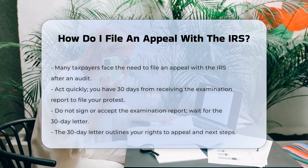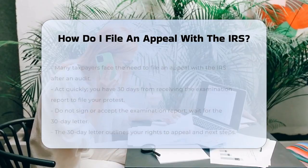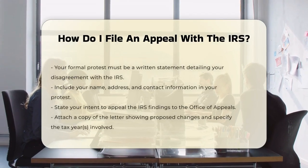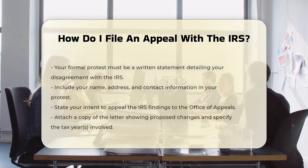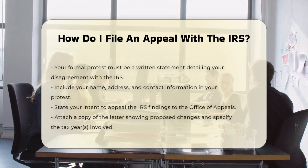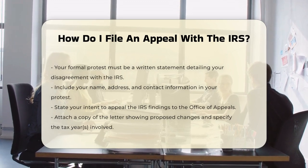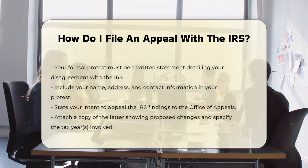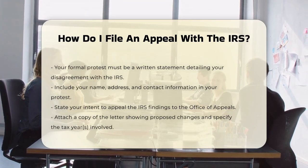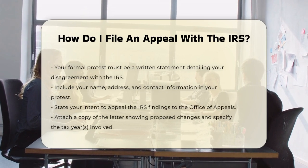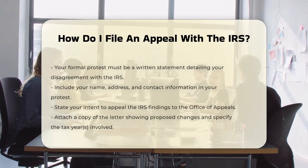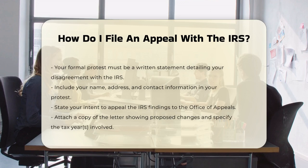Here's what you need to include: your name, address, and daytime telephone number; a statement that you want to appeal the IRS findings to the Office of Appeals; a copy of the letter you received showing the proposed changes; the tax years involved; a list of the items you disagree with and the reasons why; the facts that support your position on each item; and the law or authority that supports your position on each item, if any.